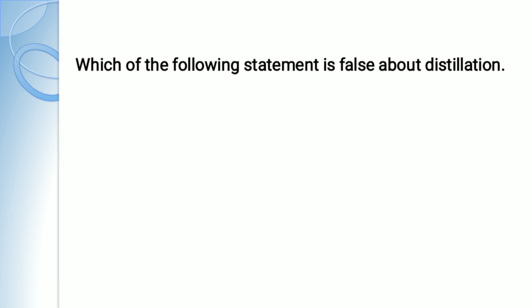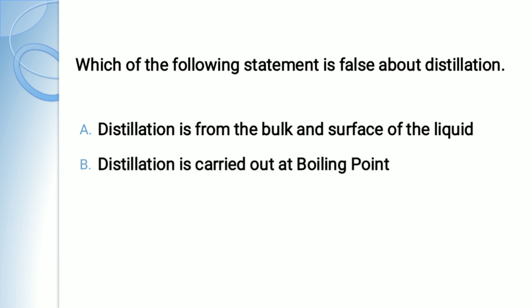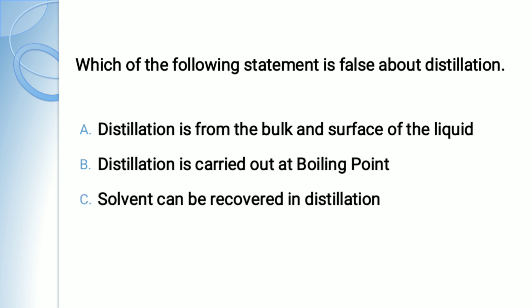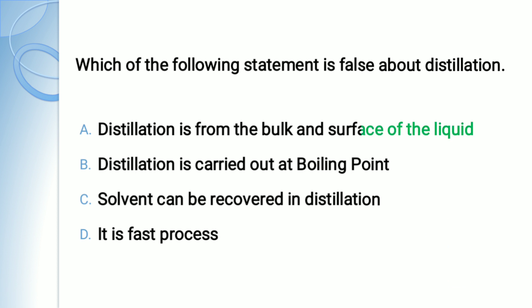Question number one: Which of the following statement is false about distillation? Option A: distillation is from the bulk and surface of liquid. Option B: distillation is carried out at boiling point. Option C: solvent can be recovered in distillation. Option D: it is a fast process. The correct answer is option A — distillation is from the bulk and surface of liquid — which is a false statement. Actually, distillation is from the bulk of the liquid, whereas evaporation is from the surface of the liquid.